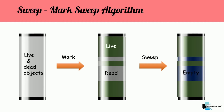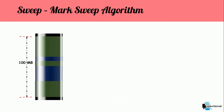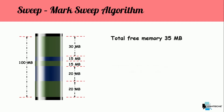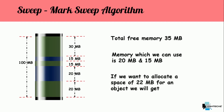Let's understand this further. Assume the memory size is 100 MB. For free memory, let's assume we have 35 MB, which consists of 20 MB and 15 MB. Now let's say there is a requirement to allocate a space of 22 MB for an object. In this scenario we do have 35 MB of free memory, but this memory is not consecutive. Which means we are not able to assign 22 MB for an object even though we have free memory. This will lead to an out-of-memory error because the memory is fragmented.